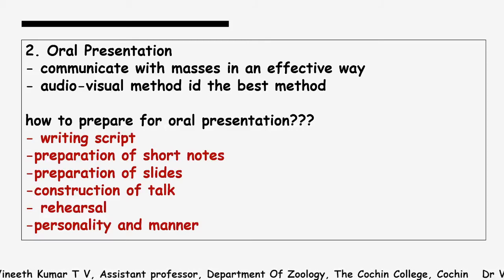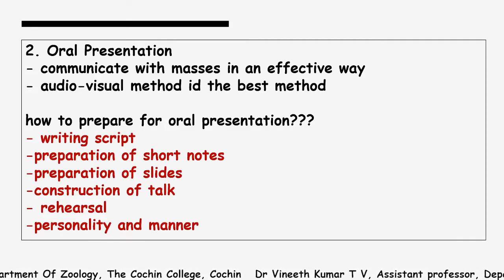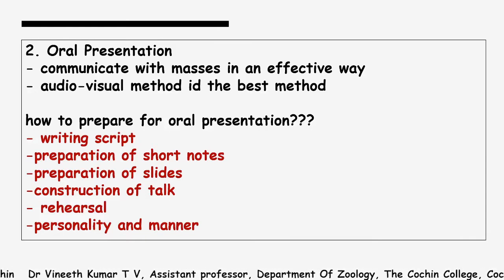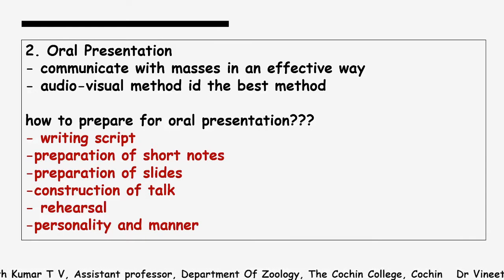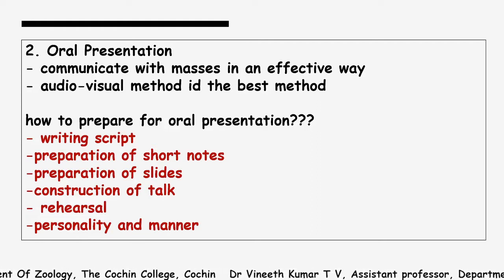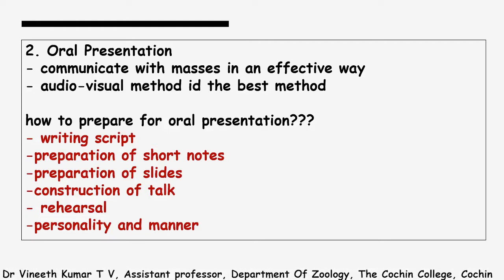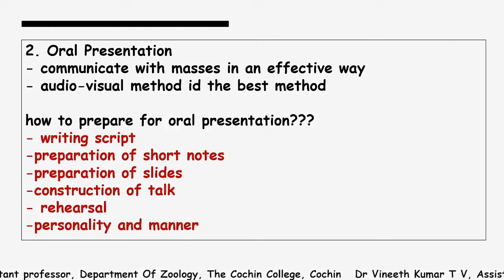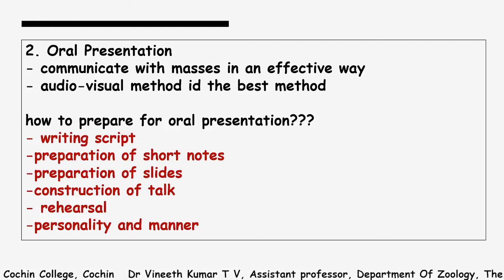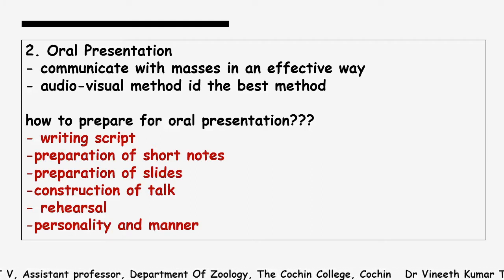Hello everyone. In the last session we were discussing about the first type of communicating scientific work or a scientific project or a research work, and we talked about how to write a project report or a research report, otherwise called a journal paper or a research paper.